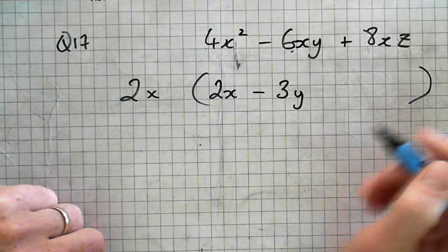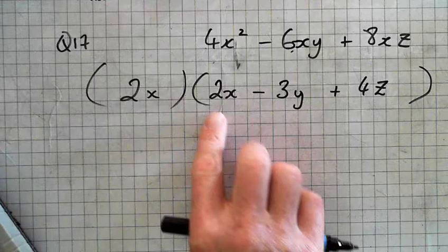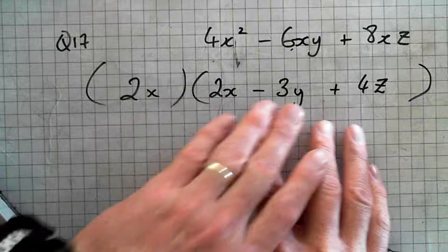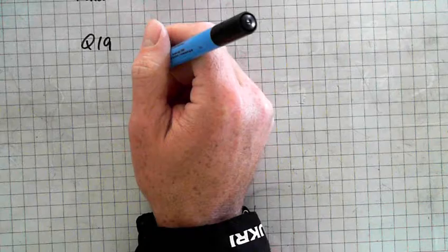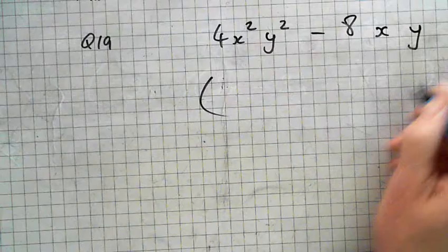Alright. So, 2x times what? 4x squared. 2x. 2x. Z. Yeah. That's it. So, remember. 2x is a factor. And all of this is a factor. So, there's two factors. When I multiply these factors. This times all of that. I get this. I get my answer.